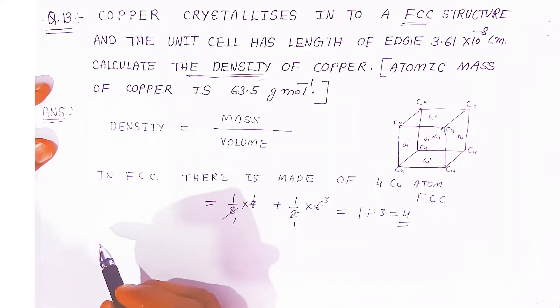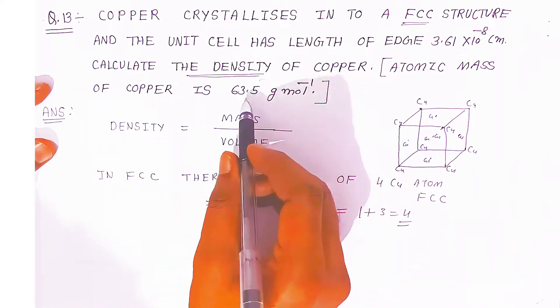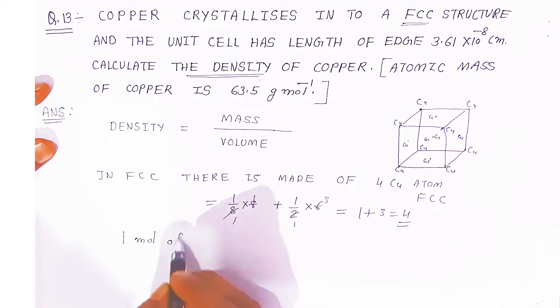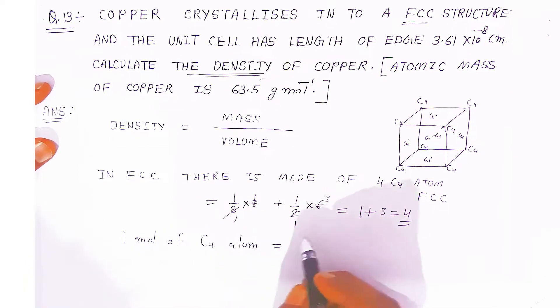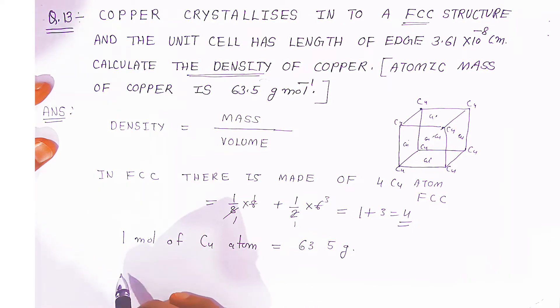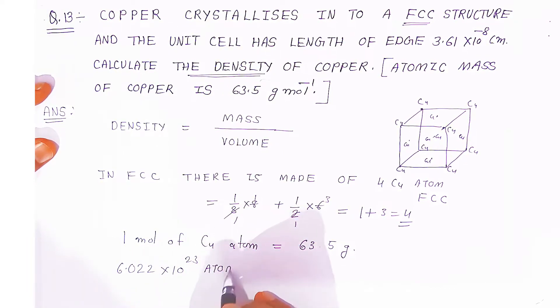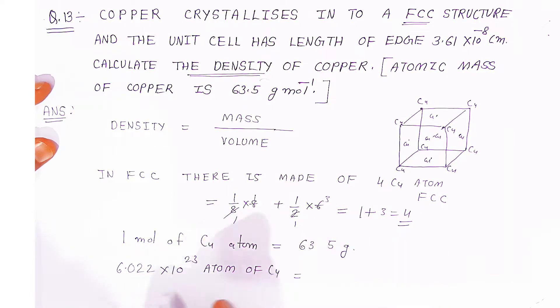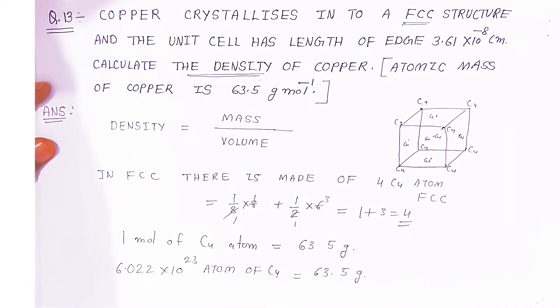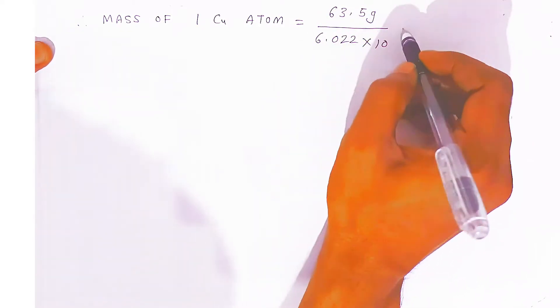Now we are going to calculate the mass first. You know the atomic mass of copper — it is given as 63.5 gram per mole. That means 1 mole of copper atoms equals 63.5 gram. In 1 mole of copper atoms, how many copper atoms will be there? That is Avogadro's number, that is 6.022×10²³ atoms of copper. So when you weigh 6.022×10²³ atoms of copper, the weight will come to 63.5 gram. Now you are going to find the mass of one copper atom: divide 63.5 gram by 6.022×10²³.